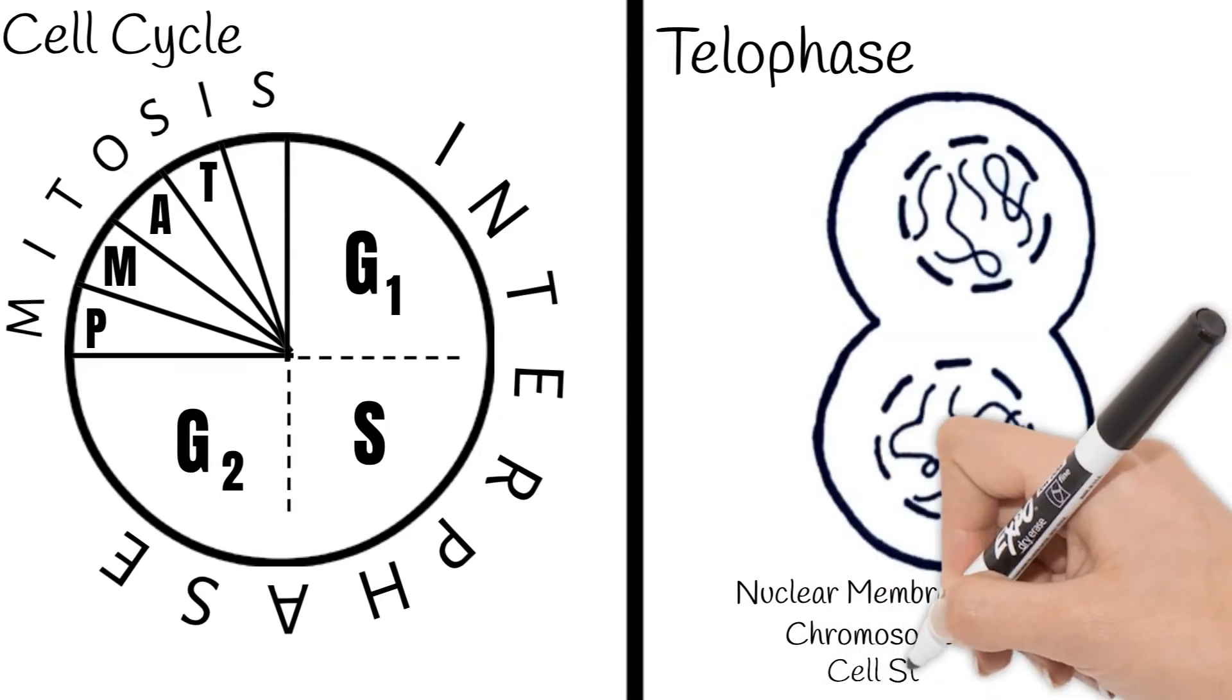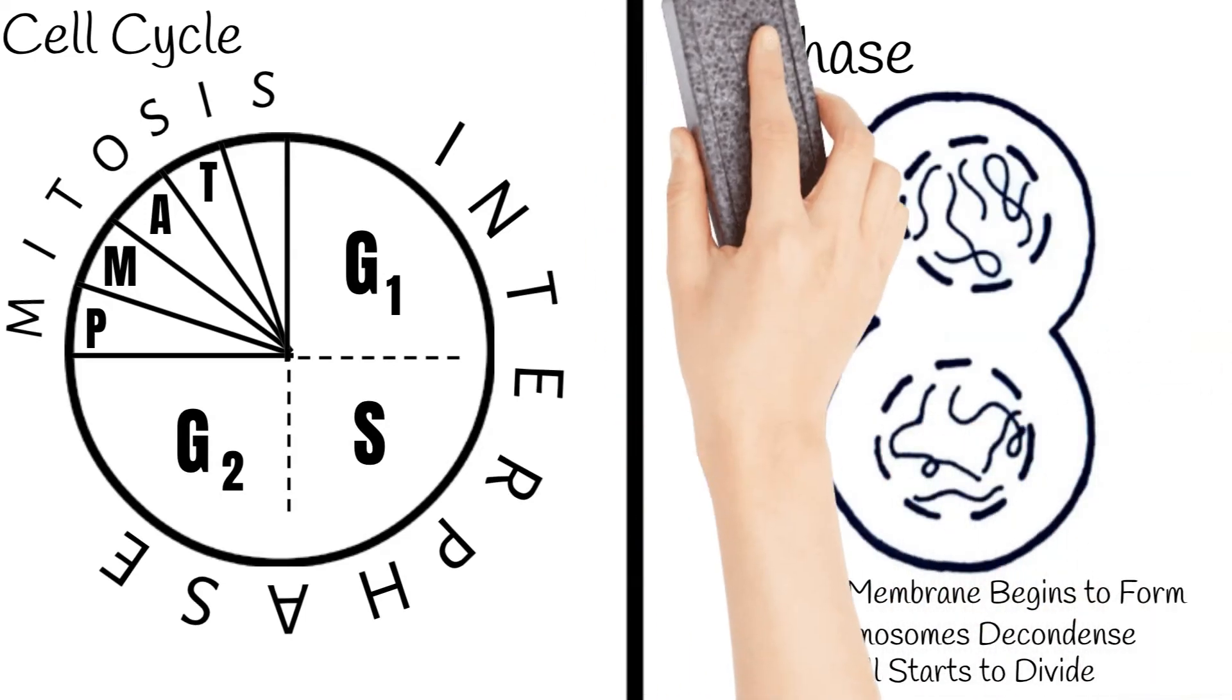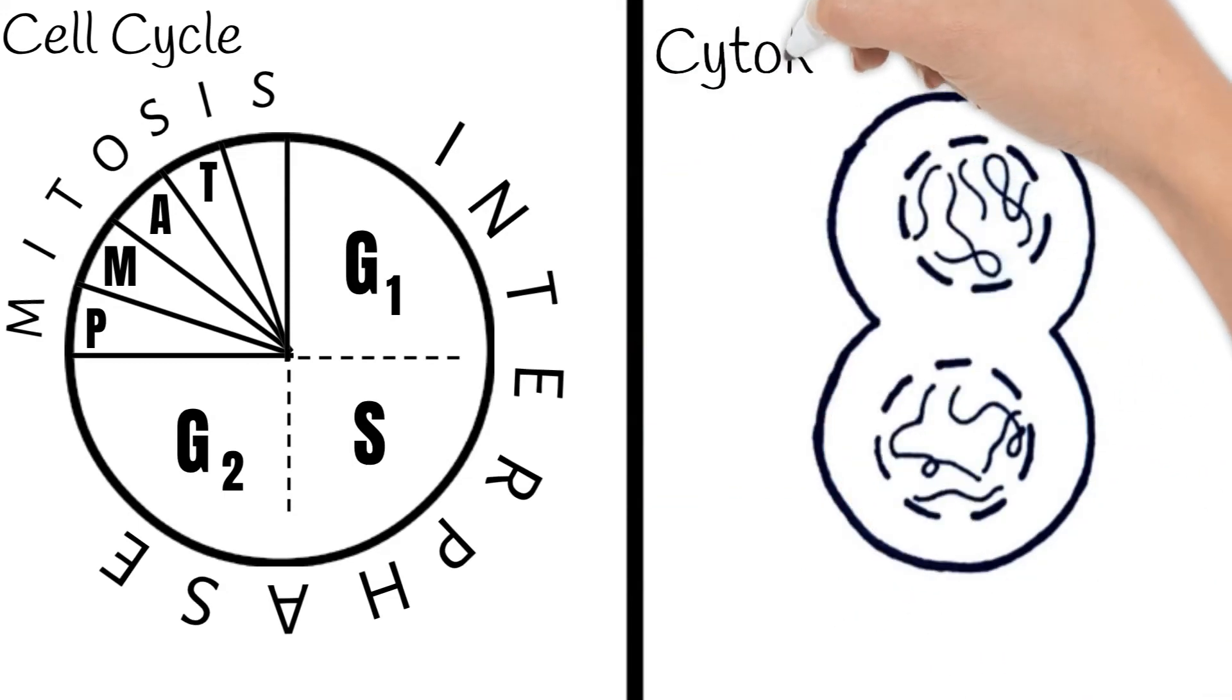The cells also start to divide. Lastly, during cytokinesis, the cell actually divides into two.